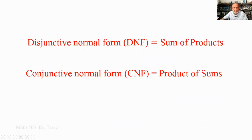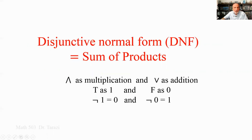DNF stands for Disjunctive Normal Form, and I am going to refer to it as sum of products. Conjunctive Normal Form, CNF, is referred to as product of sums. I will start with DNF. Before I do that, think of the AND operation as multiplication and the OR operation as addition.